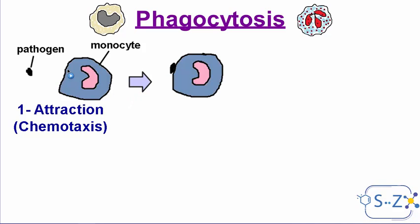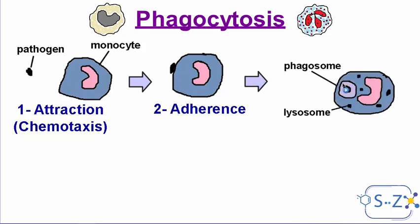The next step is that the pathogen sticks to the cell membrane of the monocyte or granulocyte — this is called adherence or attachment. The pathogen attaches to the membrane of the monocyte. Then the monocyte swallows or ingests the pathogen and forms a sac around it called a phagosome. This step is called ingestion.